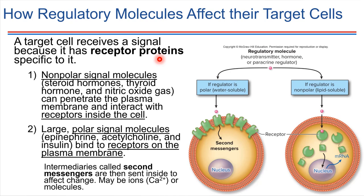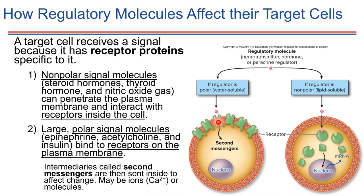There are a couple of different options for where receptor proteins could be located. They could be located directly in the plasma membrane, where they hang out and wait for signals to arrive. These are the types of receptors that receive signals if the signal is a large molecule or a very polar molecule — in other words, a signal that cannot cross the plasma membrane. In that case, the receptor protein would be in the plasma membrane.